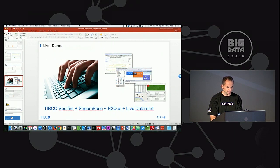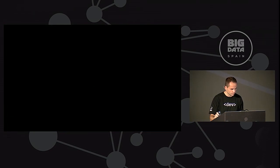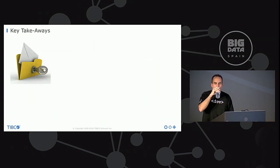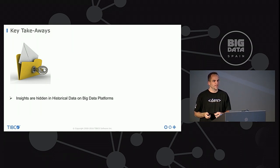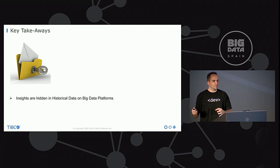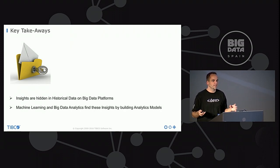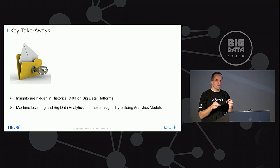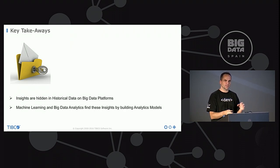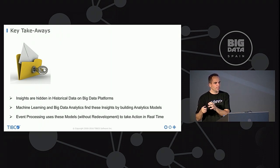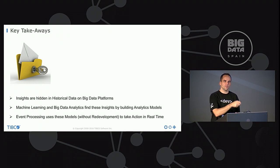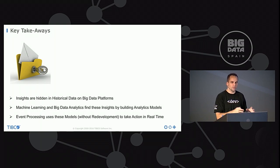Let's go back to the slides for the conclusion. Takeaways: insights are hidden in historical data — that's the starting point, you have to find the patterns first, otherwise you have nothing to deploy. The stored data is usually in Hadoop, a NoSQL database, or even CSV files. Then we leverage machine learning for complex data because the computer has to learn — we cannot program everything with if-else clauses. The final step is to apply that to real-time processing, and the key lesson learned is to do it without redevelopment, so you don't have to cycle twice through building, testing, and validating a model.